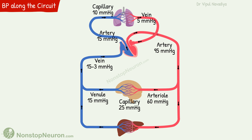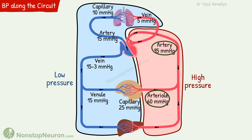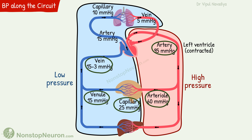The second point is that the entire circulation can be divided into two parts based on pressure: a high pressure system and a low pressure system. The high pressure system includes systemic arteries and arterioles, and we can also include the left ventricle in its contracted state. The low pressure system extends from systemic capillaries through the remaining circuit, including the entire pulmonary circulation, as well as the left ventricle in its relaxed state.